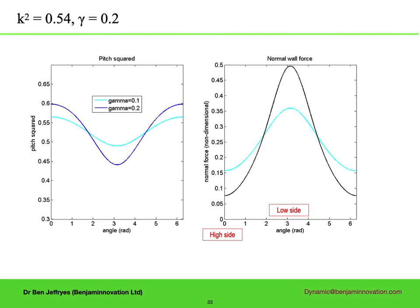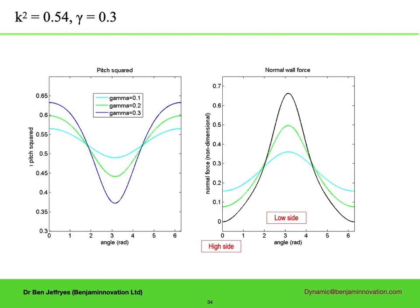Higher gamma, but same mean pitch squared. There is more pitch variation and more force variation in this non-dimensionalized form. Even higher gamma, right on the limit for normal side force, which drops to 0 at the high side.